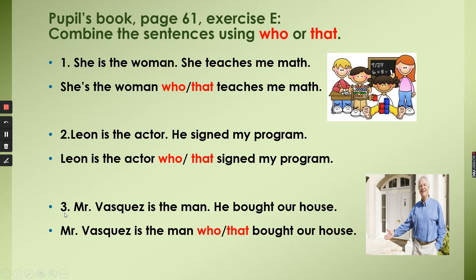Number three: Mr. Vasquez is the man. He bought our house. We can say: Mr. Vasquez is the man who or that bought our house.